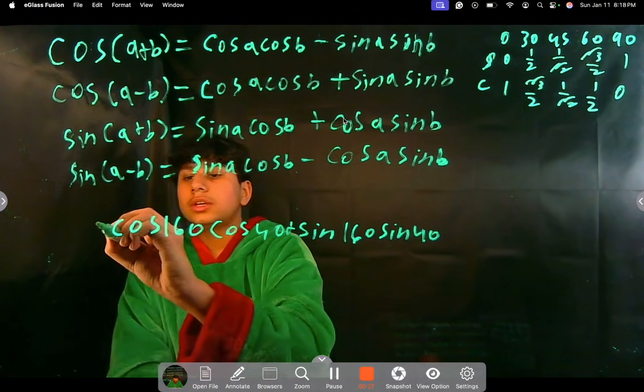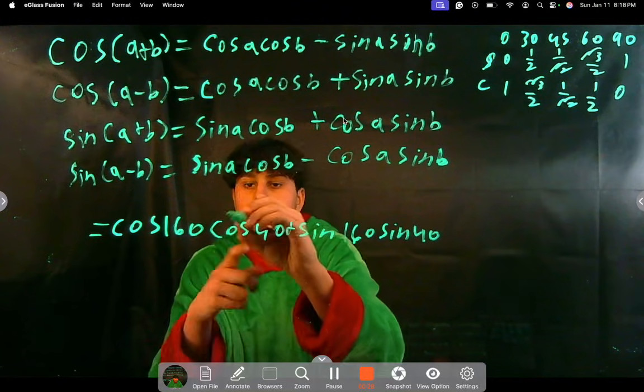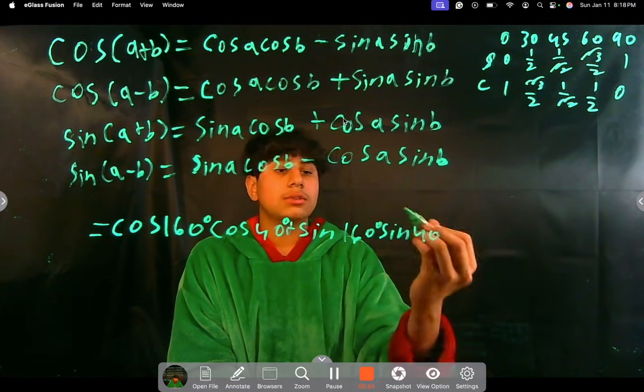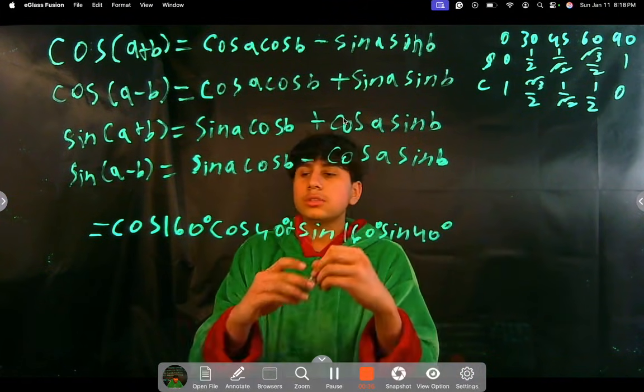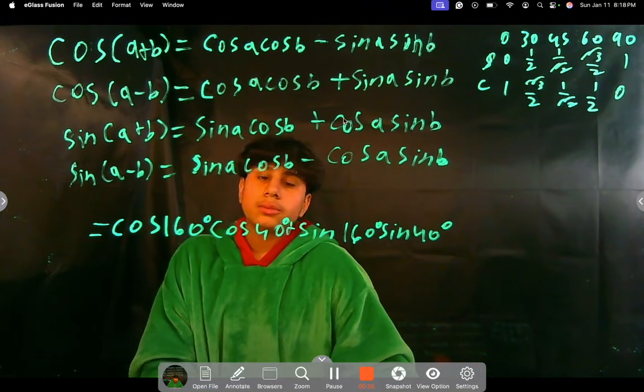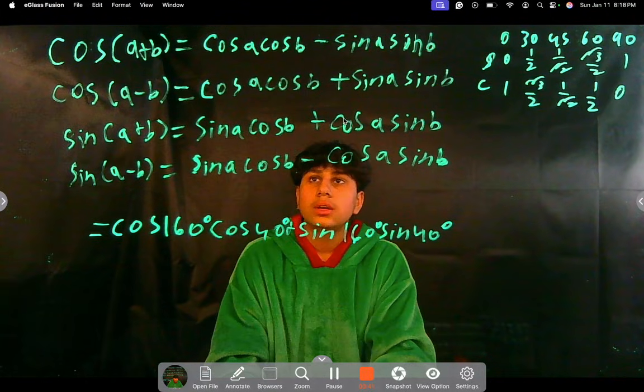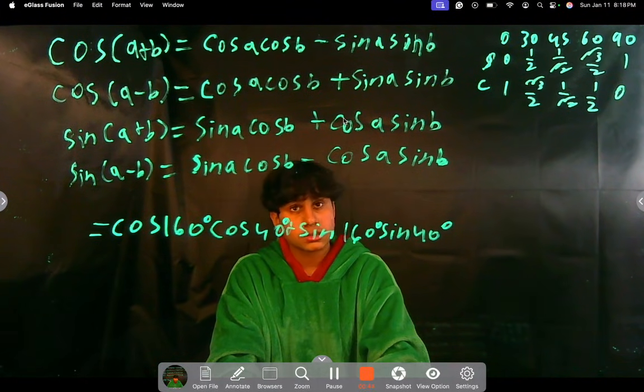So what do we see here? It's cosine of 160 degrees times cosine of 40 degrees plus sine of 160 degrees and sine of 40 degrees. So this is a pretty simple problem because we can just look at what we have and then we'll be able to solve this pretty easily.